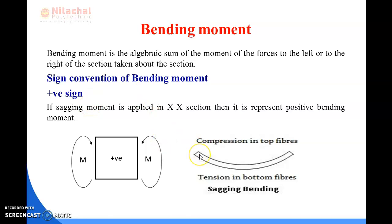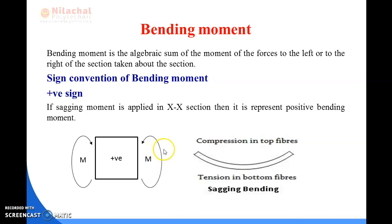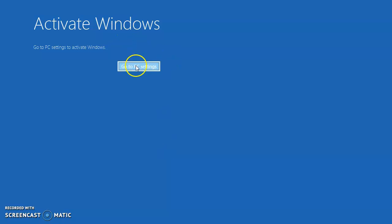For the positive moment, that is the sagging moment, the bending moment is known as sagging bending moment. This kind of moment representation is known as sagging moment. Due to sagging moment, the upper part of the body belongs to the compression zone and the lower part of the body belongs to the tension zone. That is why the bending of the body due to the sagging moment is known as sagging.